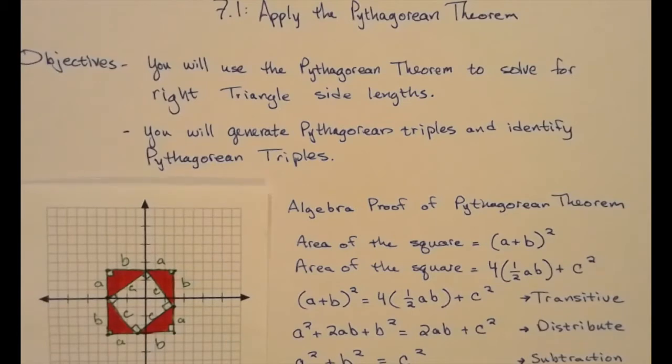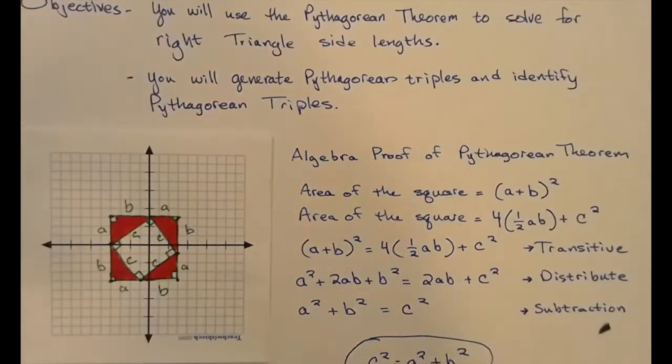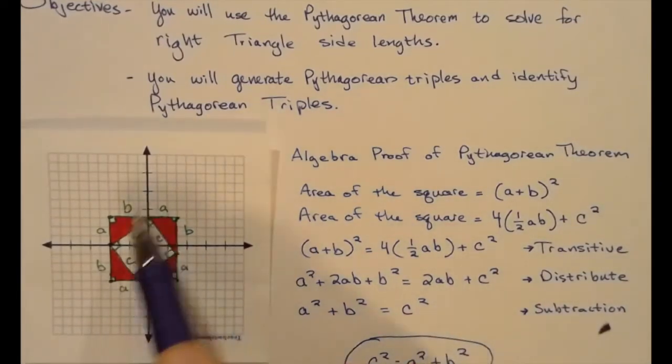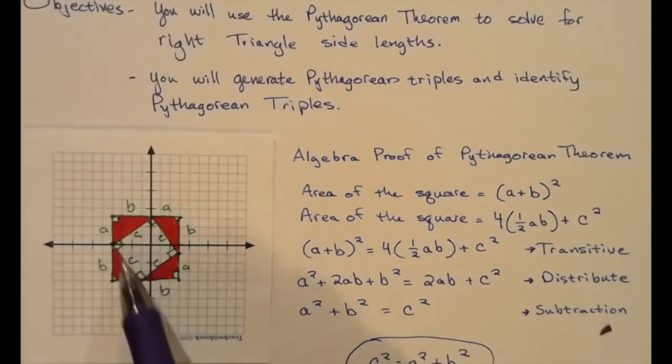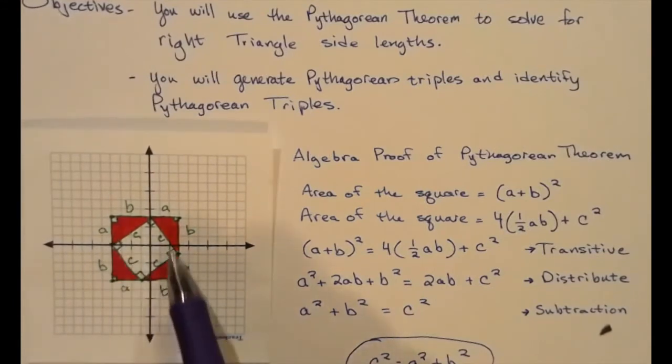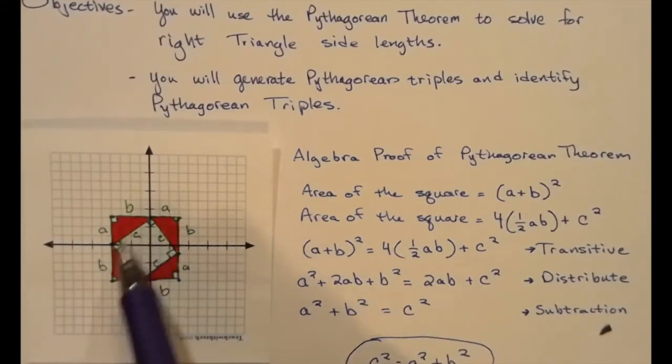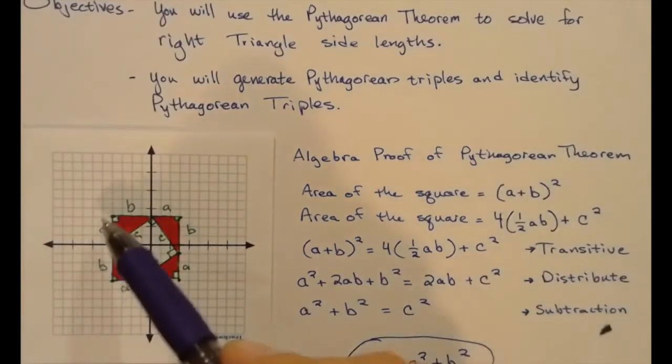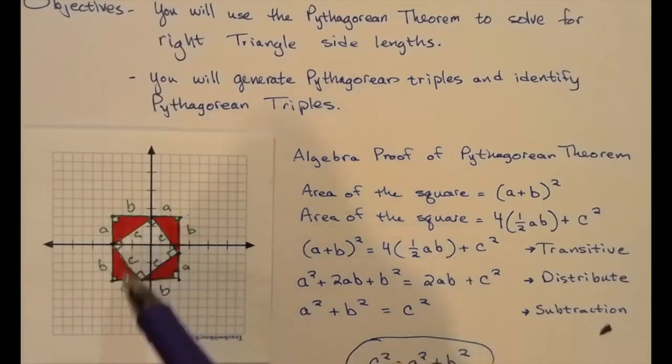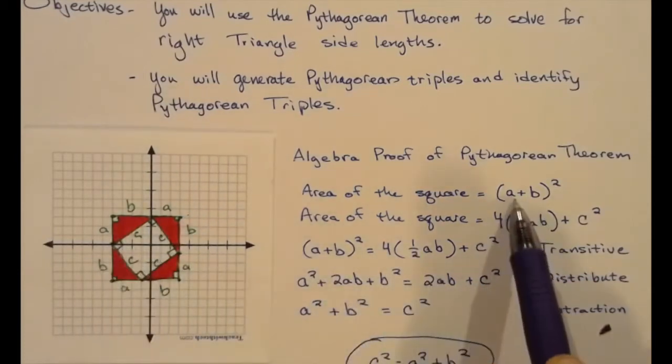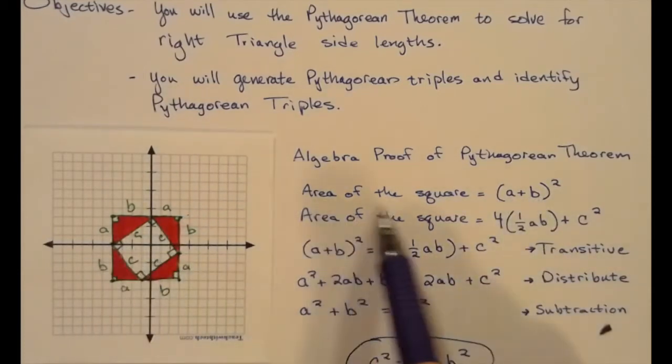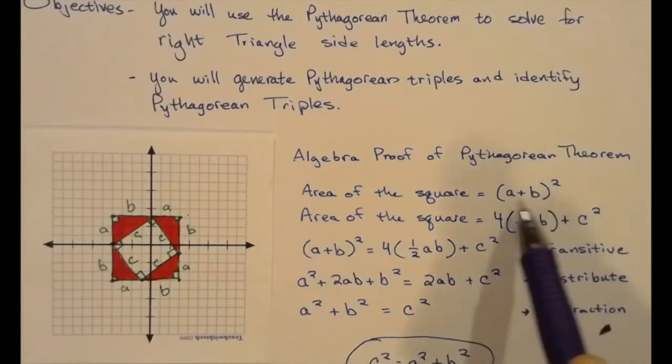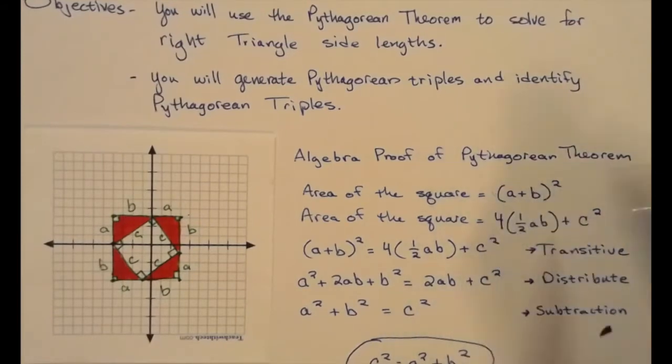First, a quick little algebraic proof. There's literally hundreds of proofs for the Pythagorean Theorem. This one's pretty basic and easy to follow. If we consider these four little right triangles and the square that is inside of it, if we look at each side of this big square, each side length is a plus b. So the area of the big square is (a+b) as a side length squared.